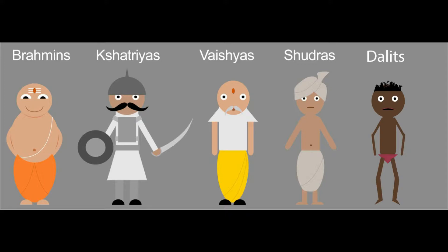The four categories are: Brahmin, who is the priest or the learned class; Kshatriyas, who were warriors; Vaishyas, who were traders or merchants; and Shudras, who were unskilled workers and laborers who did menial, small jobs.